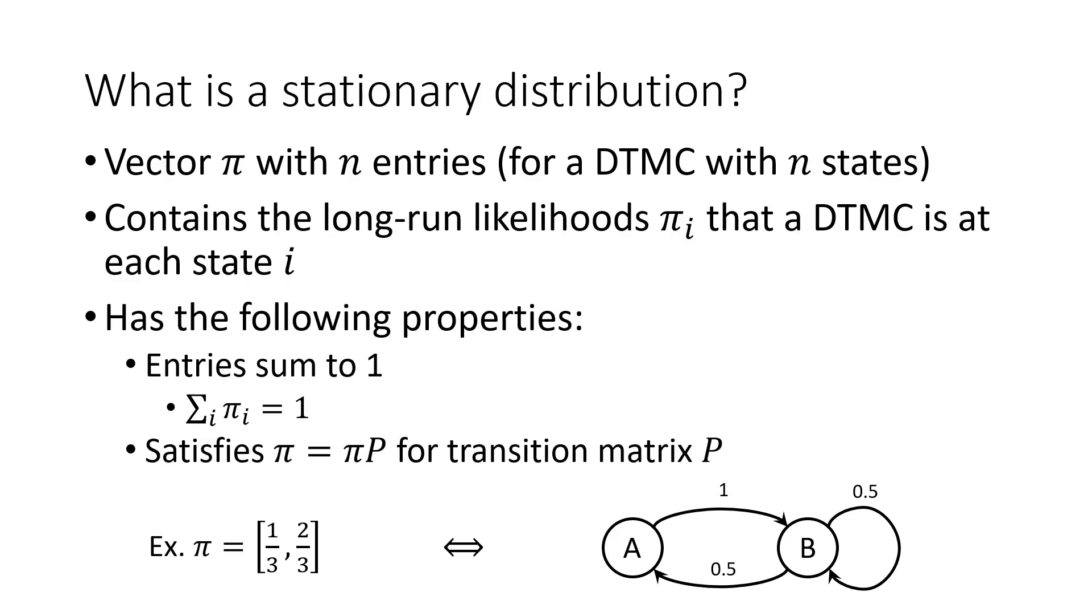First, let's talk about what a stationary distribution is. The stationary distribution of a DTMC is a vector, commonly called π, with the same amount of entries as there are states in the DTMC. Each of these entries is the long-run likelihood that the DTMC is at the state given by that entry's index.